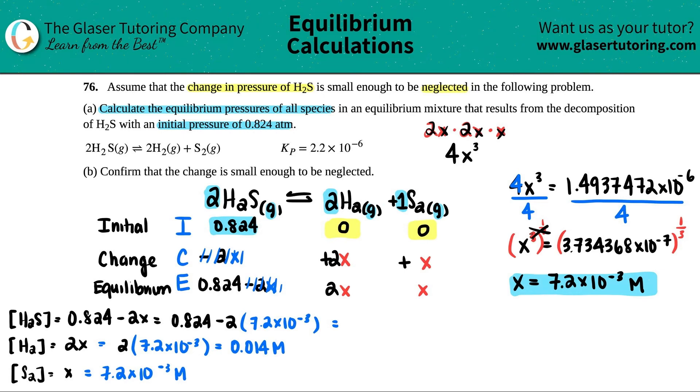So 0.824 minus 2 times 7.2 times 10 to the negative third. And I get 0.8096. And if I just round this, it would be 0.810. And that's molarity. Okay, so we found out all of the concentrations. So the H2S concentration is 0.810. The concentration of H2 was 0.014. And then the concentration of S2 is 7.2 times 10 to the negative third. So we answered letter A.